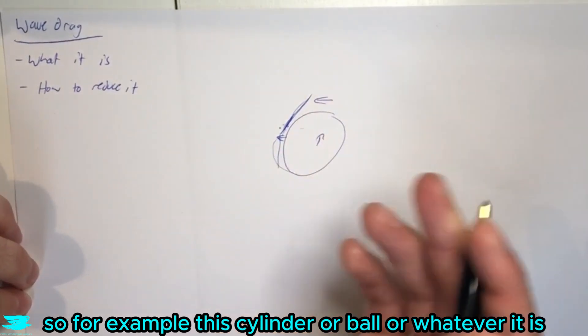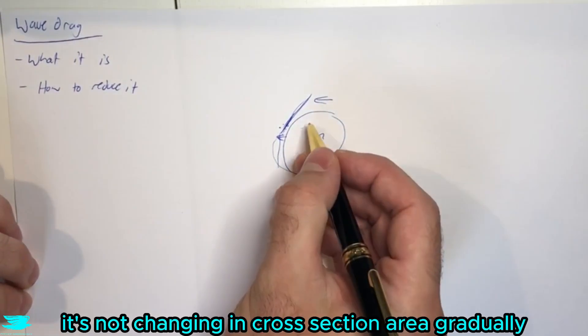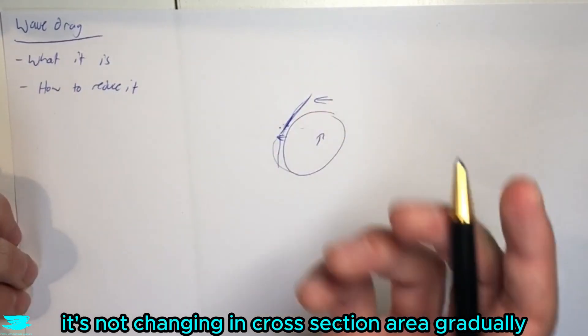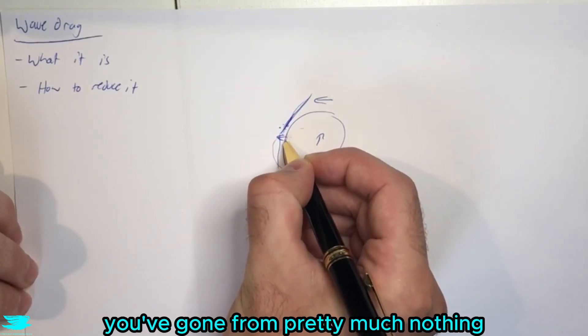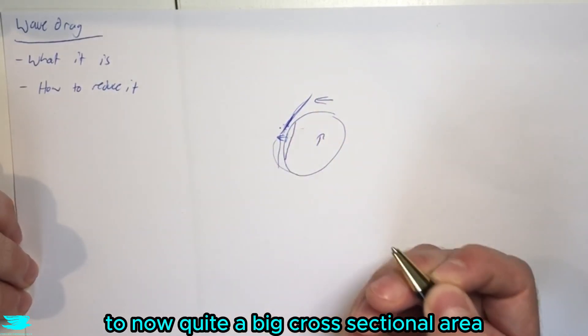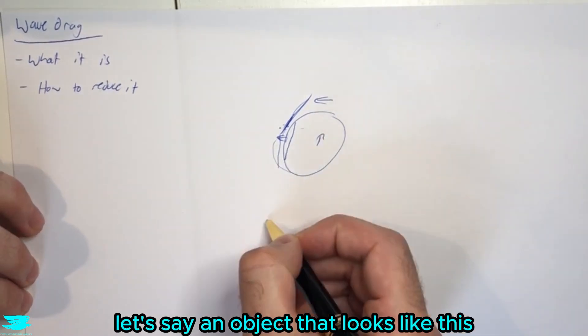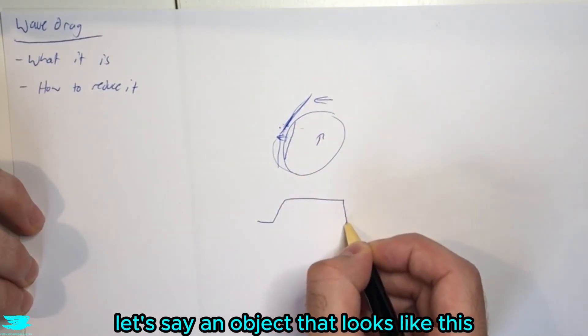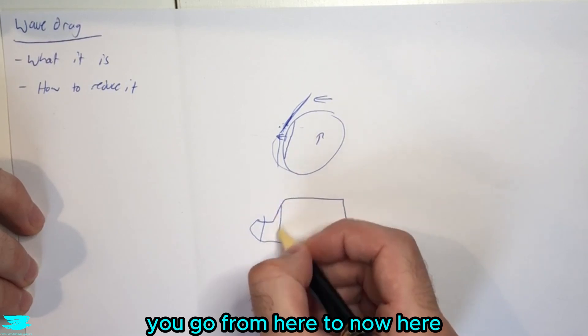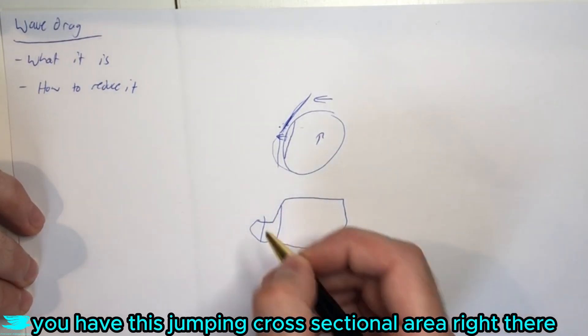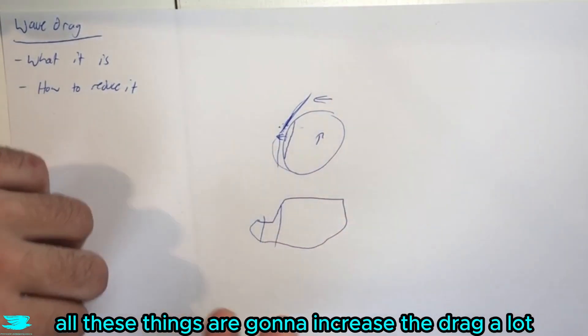So for example, this cylinder or ball, whatever it is, it's not changing in cross-sectional area gradually, because if you go from here, just right here, now you've gone from pretty much nothing to now quite a big cross-sectional area. And if you have, let's say, an object that looks like this for whatever reason, you go from here to now here, you have this jump in cross-sectional area right there. All these things are going to increase the drag a lot.